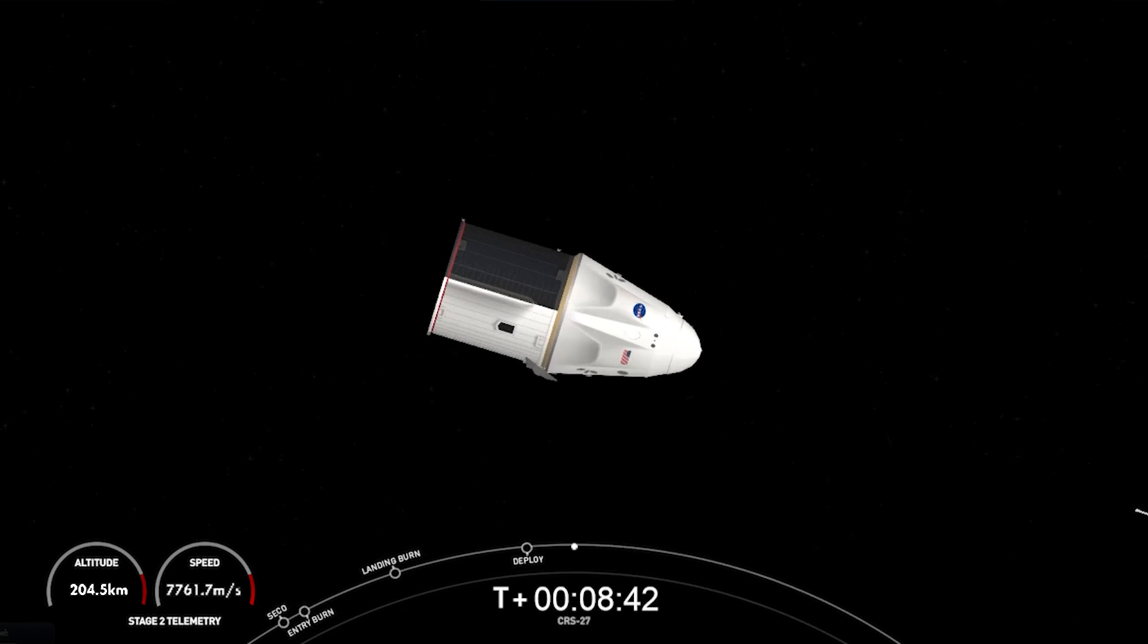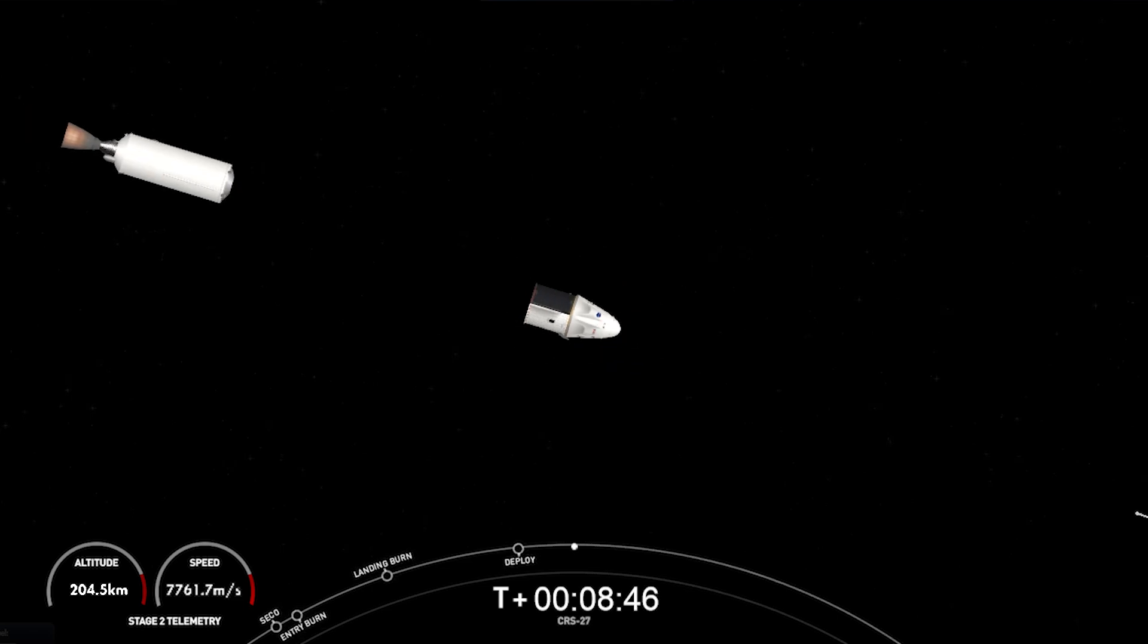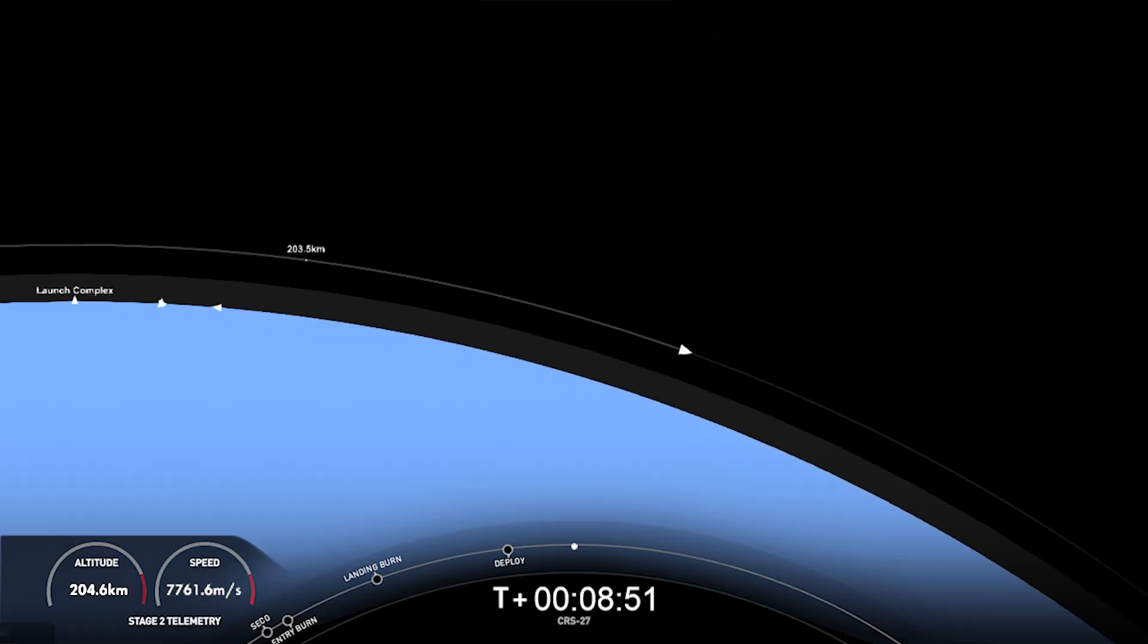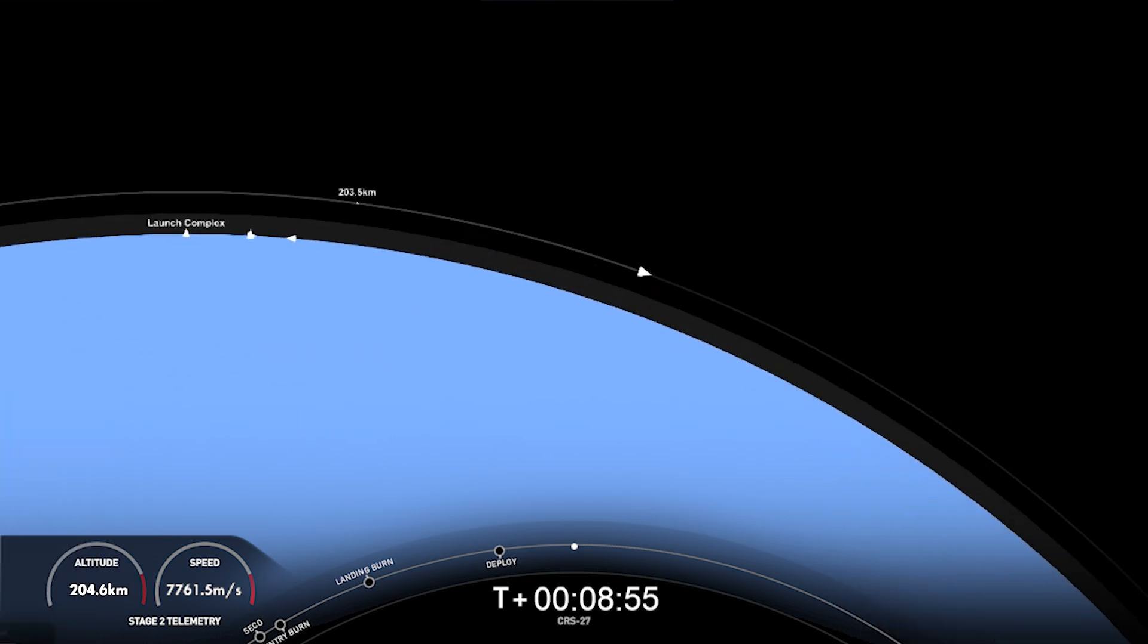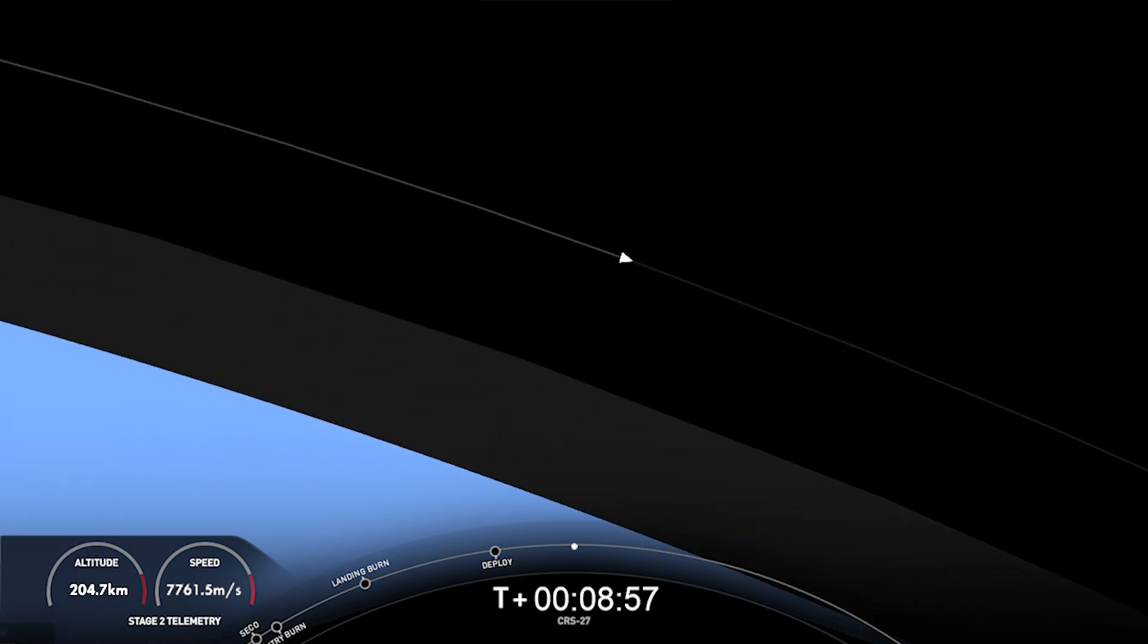As for cargo, today we will be delivering more than 6,000 pounds of science, research, crew supplies, and vehicle hardware to the orbital laboratory and its crew. To date, SpaceX has sent and brought back over 270,000 pounds of crew and cargo to and from the space station.